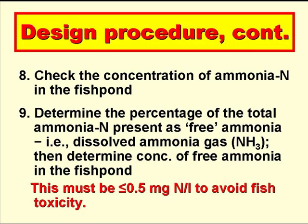Next we calculate the concentration of ammonia nitrogen in the fish pond using the Pano and Middlebrooks' equation, and then finally we determine the percentage of this that is free ammonia, i.e. dissolved NH3 gas, so that we can calculate the concentration of free ammonia in the fish pond, and this has to be no more than 0.5 mg nitrogen per litre, in order to avoid any toxicity to the fish.